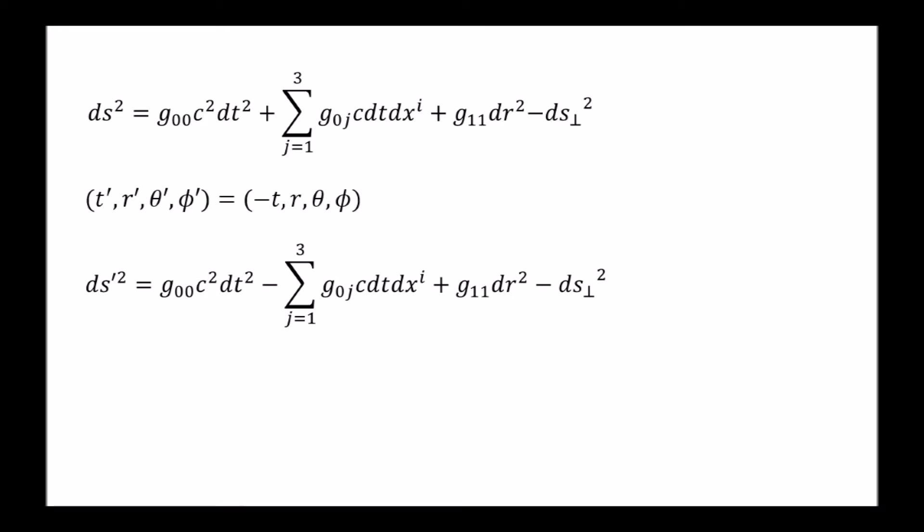But since ds squared is an invariant quantity, it must be equal to ds prime squared, which leads to this identity, which in turn demands that this condition be satisfied. But this is possible only if g0i is zero.